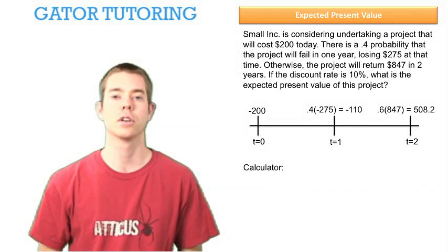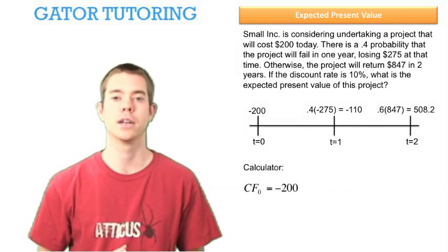We're going to go to our calculator. In time period zero, for cash flow zero, we're going to enter in negative $200.